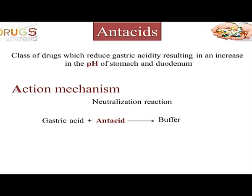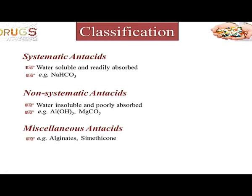Since excess stomach acid is the problem, the most natural antacid a chemist would think of is addition of a base, so that a neutralization reaction ensues and forms a buffer. This is indeed the case, and there are many such antacids available in the market. Based on the nature of these antacids, we can have systematic antacids — for example, sodium bicarbonate.